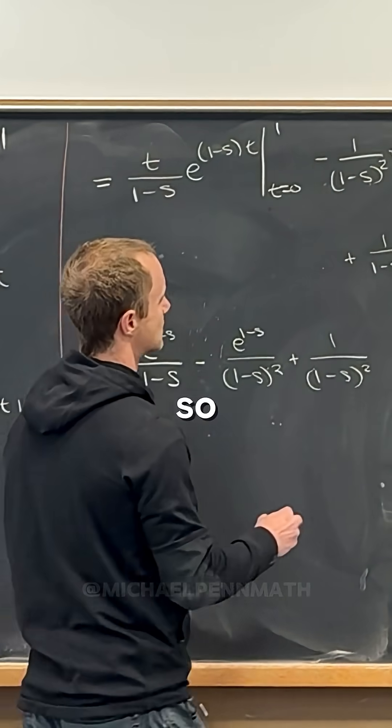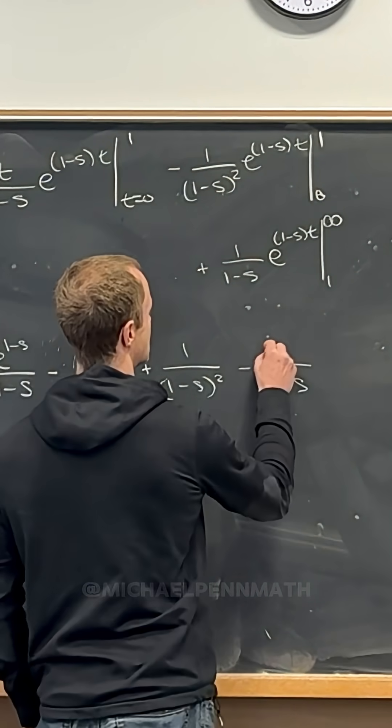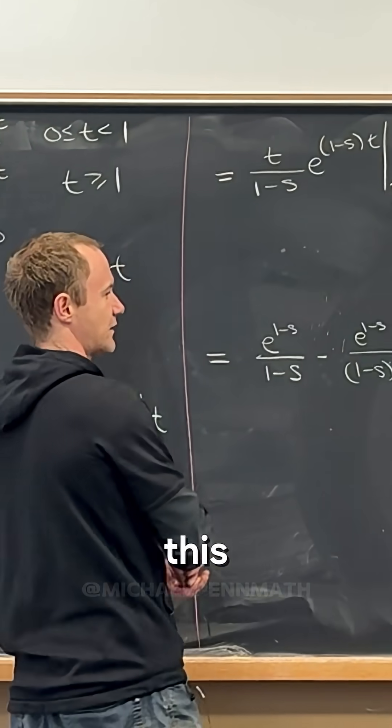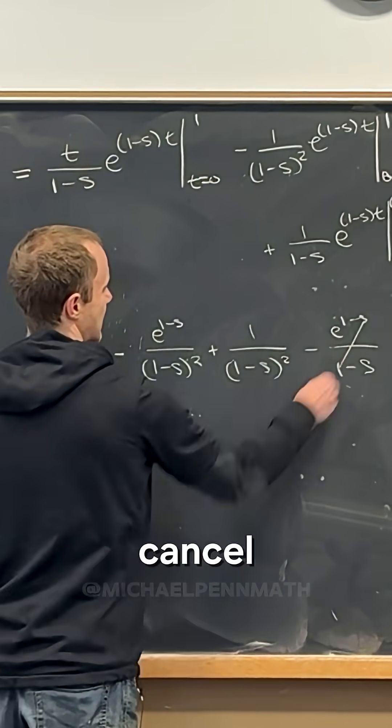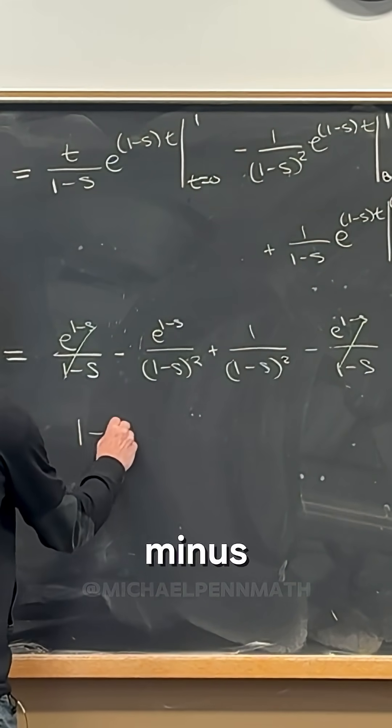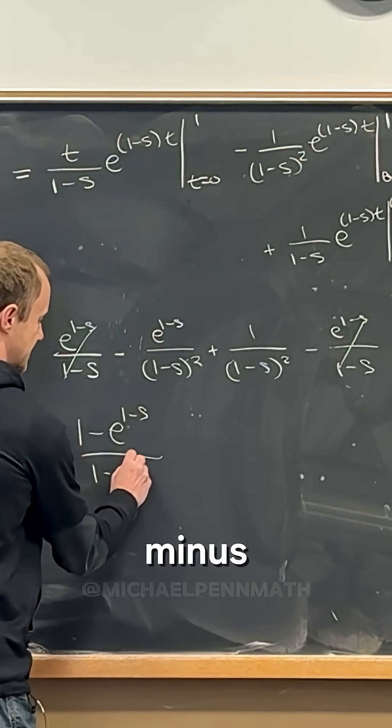So minus one over one minus s, minus e to the one over s. Yeah, like that. Yeah, no, this is the same. So this, that, and that cancel, and we are left with what in the end? One minus e to the one minus s over one minus s squared.